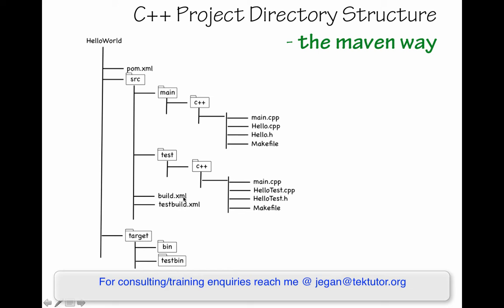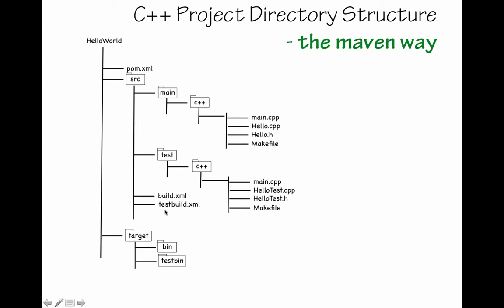These two build.xml files are Ant build scripts. The main build.xml is written to invoke the production makefile, which eventually compiles the main product. The test build configuration file is designed to invoke the test makefile, which compiles the test binaries. Maven compile or test will automatically create the target folder. The production makefiles are written so that all binaries are created in the bin folder, and all test binaries go in the test bin folder.